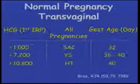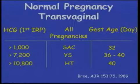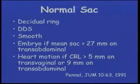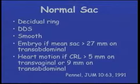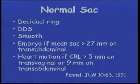We should see the gestational sac by five weeks, the yolk sac by 5.5 weeks, and an embryo by six weeks. Early work showed that with HCG levels of 1,000 we should be able to see a gestational sac; by 7,200 we should see a yolk sac; and by 10,800 we should hear heart tones — remembered as the 1-7-11 rule. A normal sac will have a nice decidual ring; there may be a double decidual sac. The embryo, if doing transabdominal scanning, should be present by 27 millimeters, whereas transvaginally we should see it by five millimeters. We generally do transvaginal scanning in these early pregnancies.